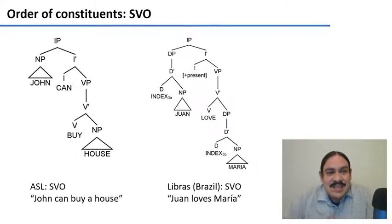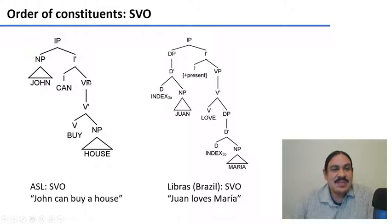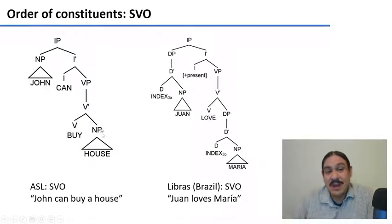These are syntactic trees for those sentences. In ASL: 'John can buy house.' As you can see, the verb phrase contains the verb and the direct object in its own noun phrase as well.